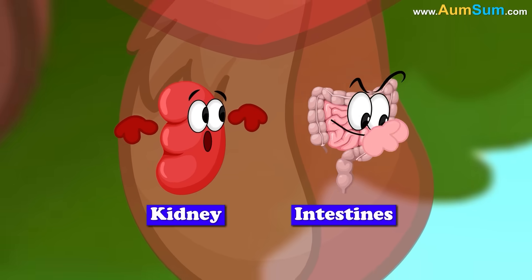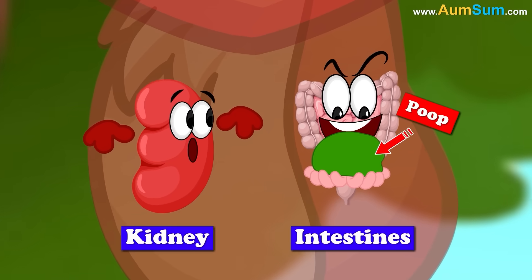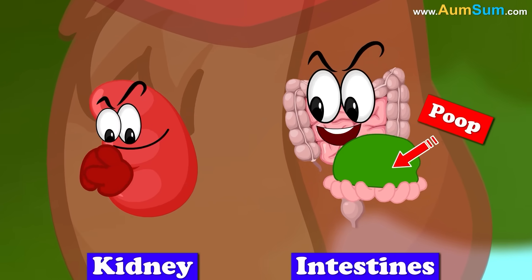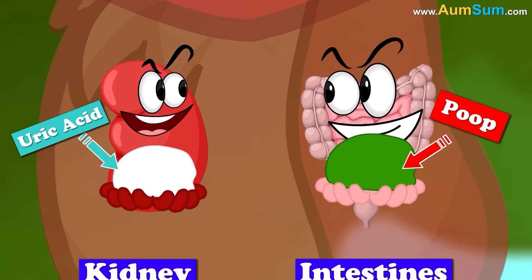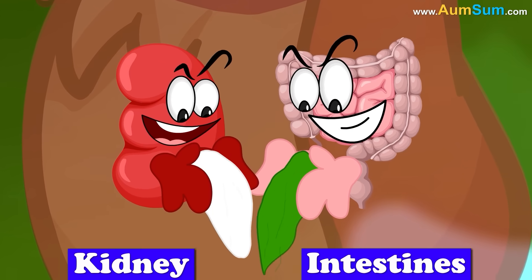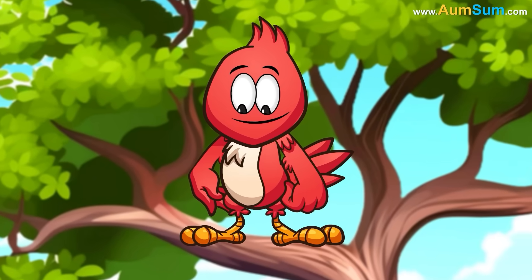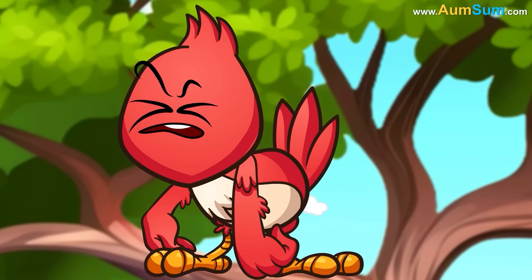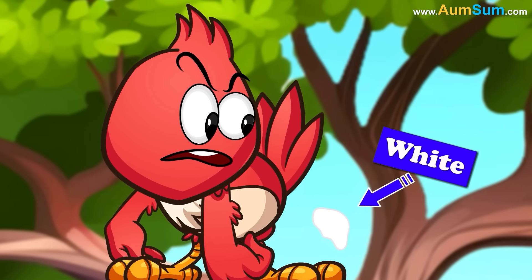The poop from intestines — that is the green part — and the uric acid from kidneys are excreted at the same time. Hence, bird poop appears white.